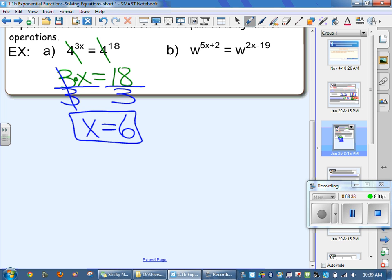We'll get into the exact same thing. B, we have a variable for a base, but it doesn't matter because it's going to go away. It's identical. So we're going to drop our bases. We get 5x plus 2 equals 2x minus 19. Now again, you need to put all your x's and variables to the left, all the constants without a variable to the right.